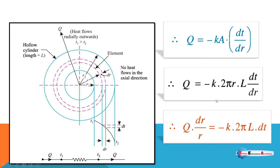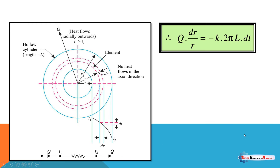After cross-multiplying, the r term is on one side and the temperature term is on the other side. So q·dr/r equals minus k times area, where area equals 2πrl, multiplied by dt.